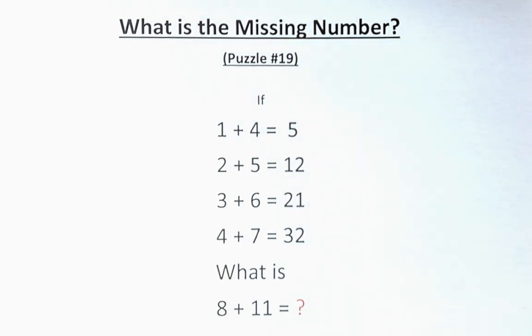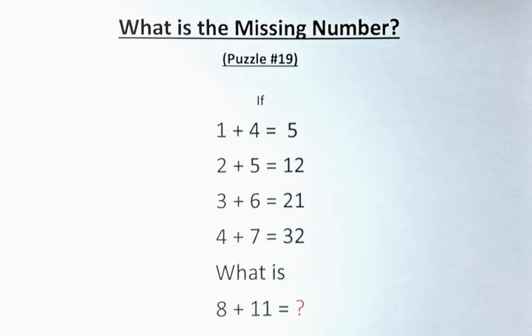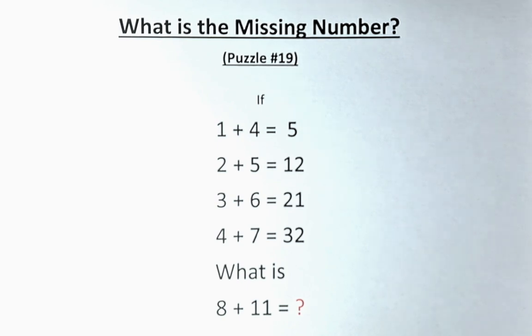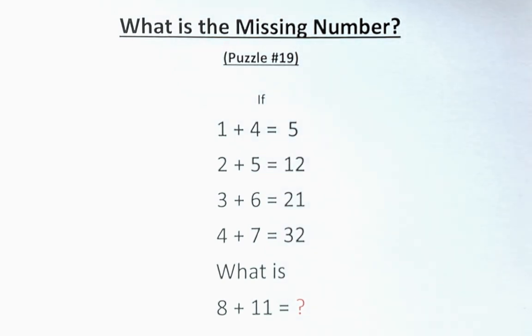Welcome back to the solution of puzzle number 19. What is the missing number in this viral puzzle? The question is: if 1 plus 4 equals 5, 2 plus 5 equals 12, 3 plus 6 equals 21, 4 plus 7 equals 32, what then is 8 plus 11? So have you solved this problem? I'll give you two solutions to this puzzle.